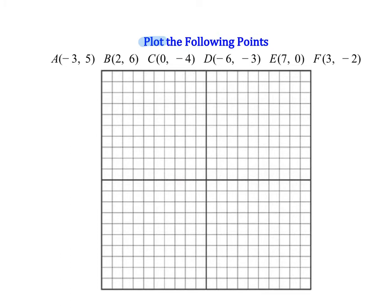For coordinate A, this tells me to move to the left three and then up five, and that's where I'm going to put my coordinate. I'll plot it and label it A. For coordinate B, x is positive two, y is positive six, so I'm at (2, 6) — I'll plot my coordinate and label it B.